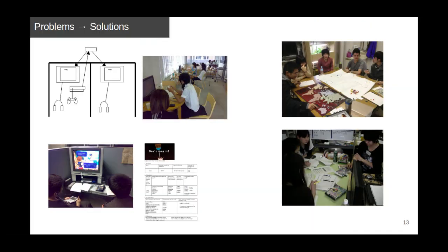To wrap up, some problems in teaching and learning with games — like students not noticing language — can be solved by using the right game or using the right task, such as pair work, a specifically designed worksheet, or an analysis task. We can make sure that students learn more critical and academic skills by connecting different teaching and learning activities to accomplish specific goals.